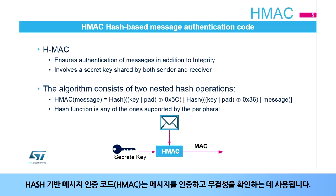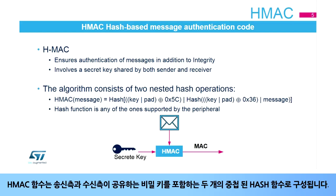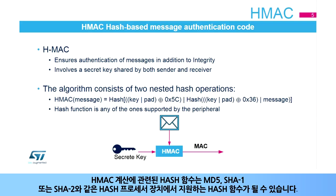The HMAC function consists of two nested hash functions with a secret key that is shared by the sender and the receiver. The hash function involved in the HMAC computation can be any one supported by the peripheral.